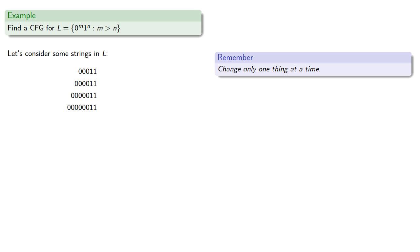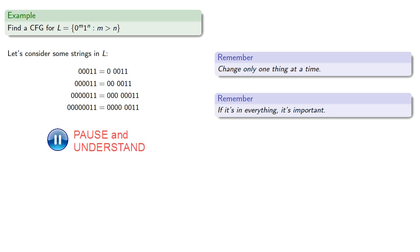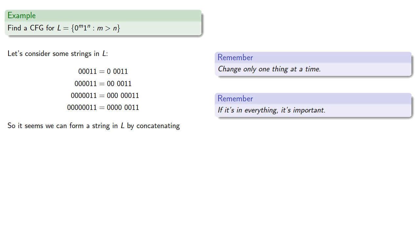Now, to analyze this — if it's in everything, it's important. Notice that the two ones are in everything, but in addition to the two ones, every one of these strings also has two zeros preceding the two ones. If we split off that 0011, we can look at our strings in a new way. It seems we can form a string in our language by concatenating at least one zero with a string where there are exactly as many zeros as ones.